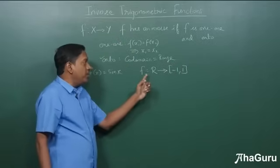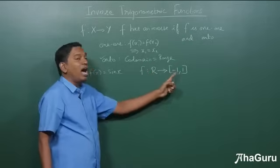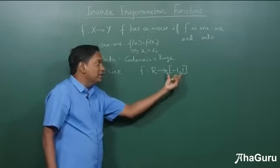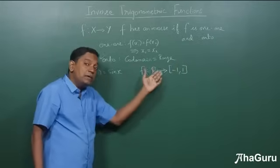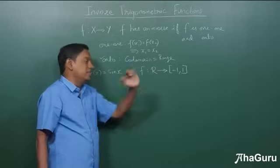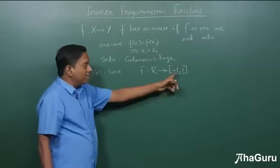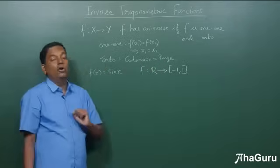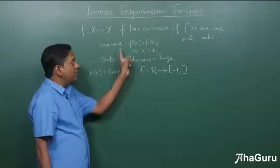If you make the co-domain the same as the range, we have taken care of the onto part. If we define f from R to R, but the range is only minus 1 to 1, the range is a subset of the co-domain and we won't be able to define an inverse. But by making the co-domain the same as minus 1 to 1, we have ensured it is onto.